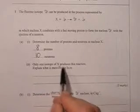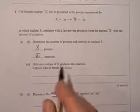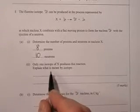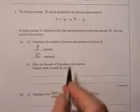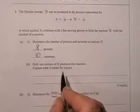Only one isotope of X produces this reaction. Explain what's meant by isotope. I was finding it much more awkward to say what's meant by an isotope than to say what isotopes in plural are.